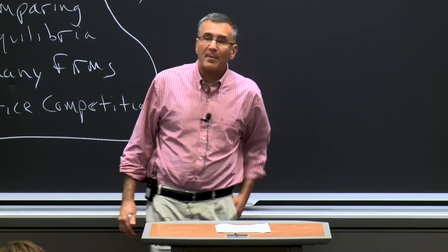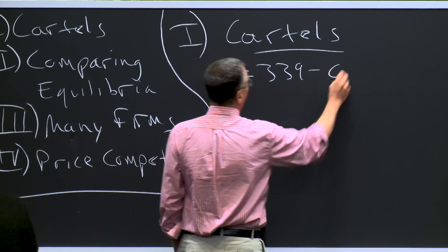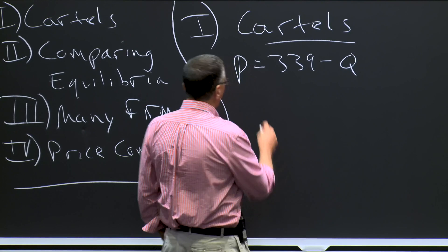Now clearly, this is going to be the best outcome. To fix examples, let's go back to our example from last time, American and United. Recall that demand was of the form: price equals 339 minus Q, and marginal cost was 147.